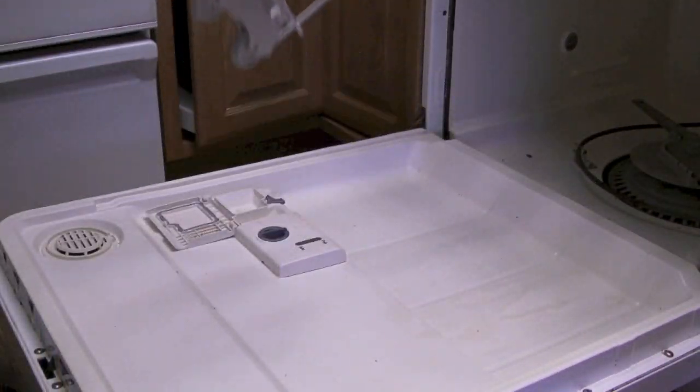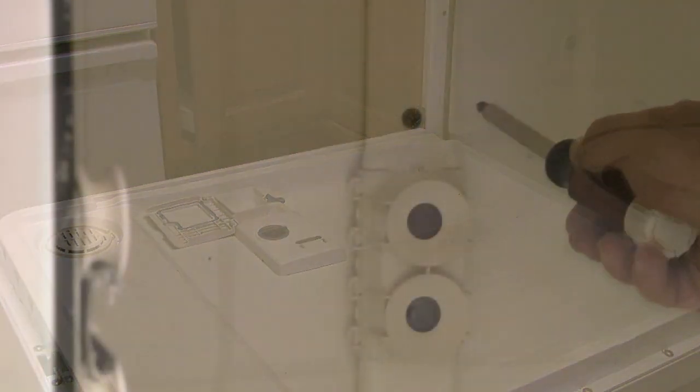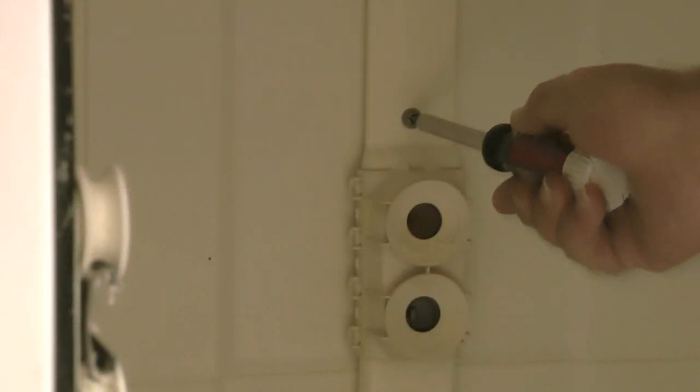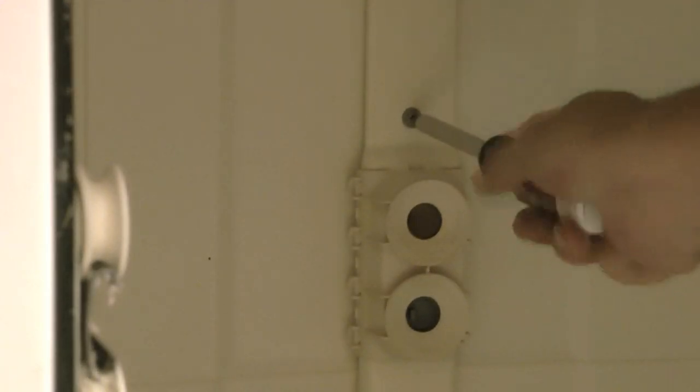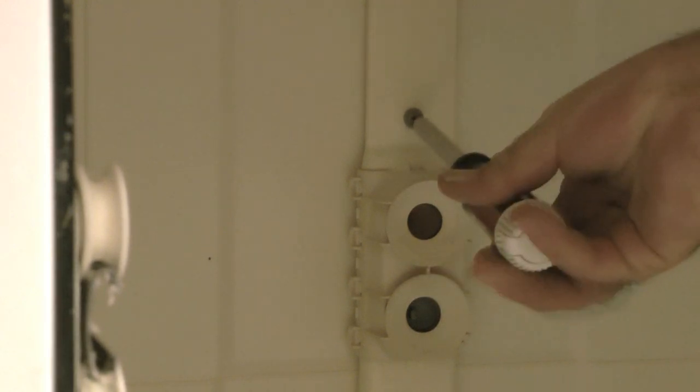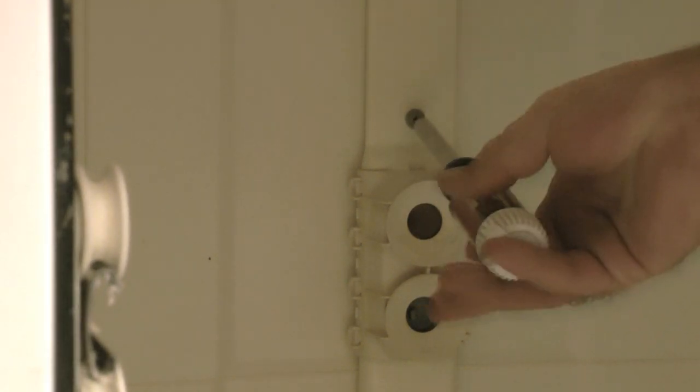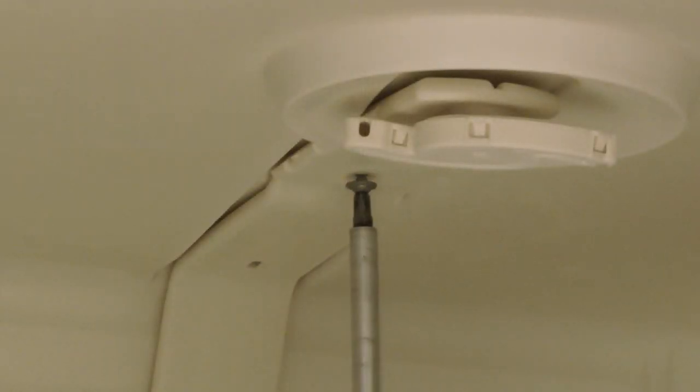Then just go ahead and remove the lower rack. Inside the dishwasher there is a supply tube that feeds water to the upper spray arm. So to access the sump I need to remove this first. It has two Phillips head screws. So I'll remove the first screw. The second screw is located on the top of the dishwasher. I need to remove it also.